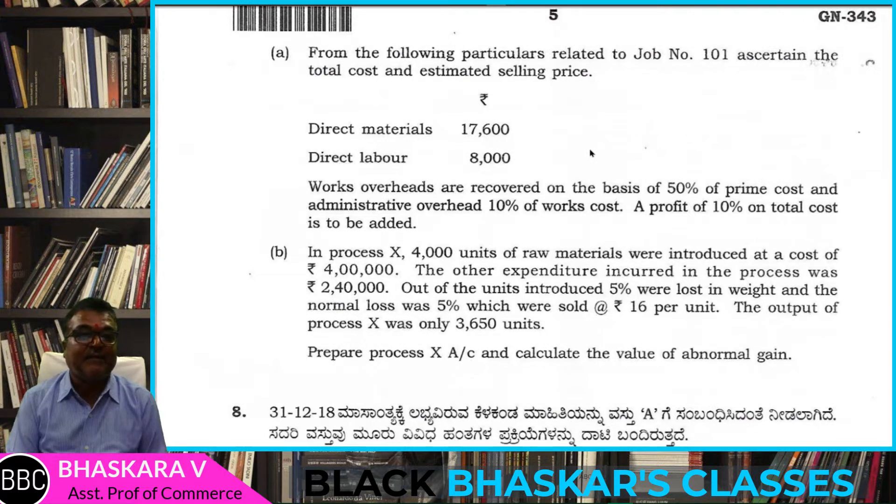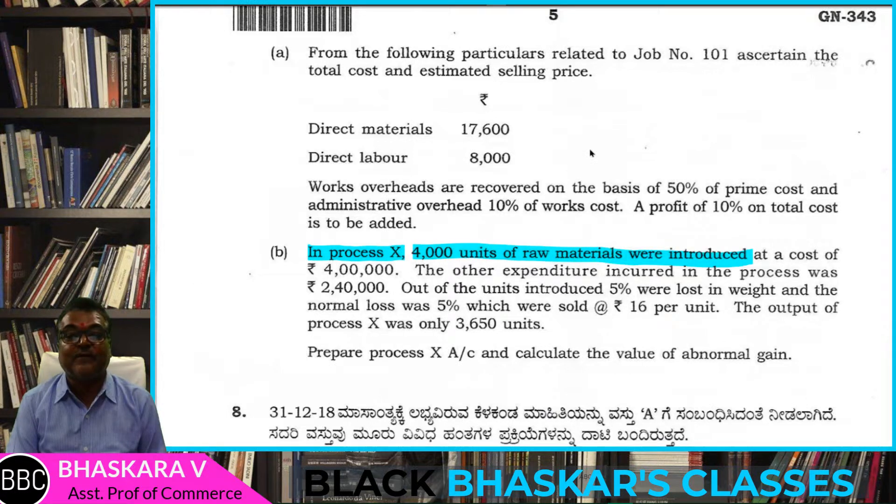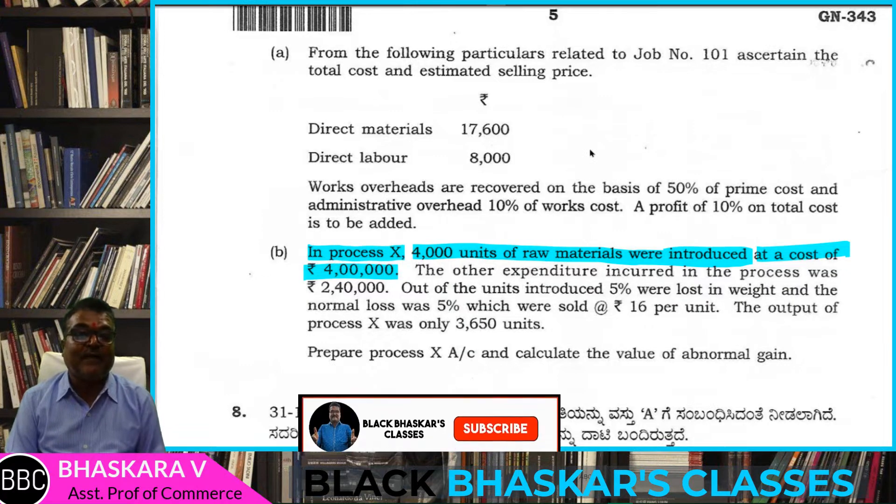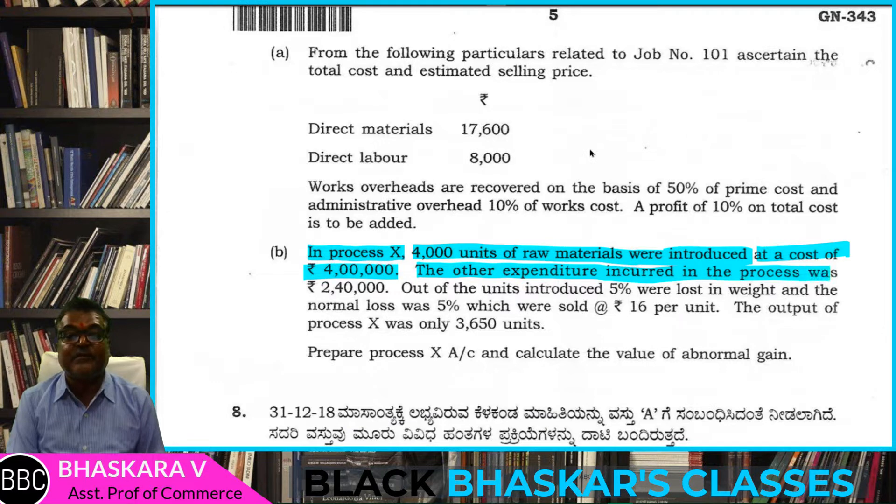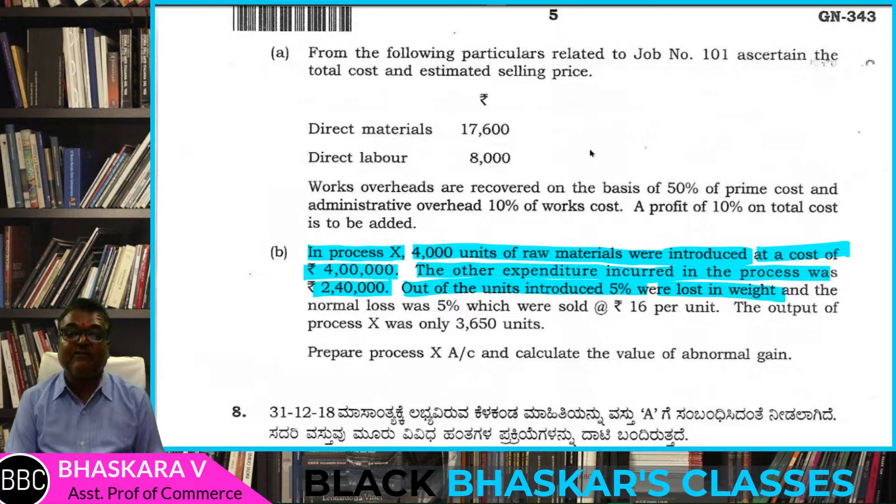Section C: In process X, 4,000 units of raw materials were introduced at a cost of Rs. 4 lakhs. The other expenditures incurred in the process was Rs. 2,40,000. Out of units introduced, 5% were lost in weight.